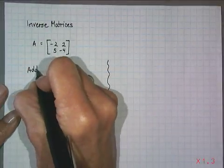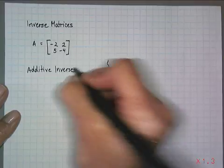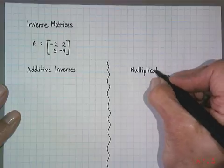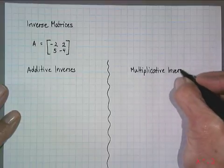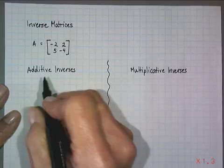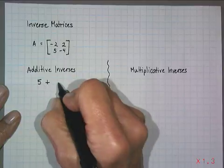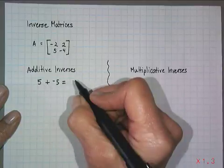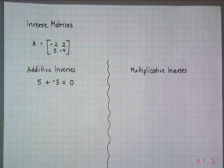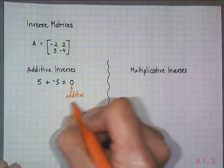First we have what we refer to as additive inverses, and then we'll compare them to multiplicative inverses. In general terms, when you take a number like 5 and add its inverse to it, it basically undoes the operation. The result is zero, which we call the additive identity.